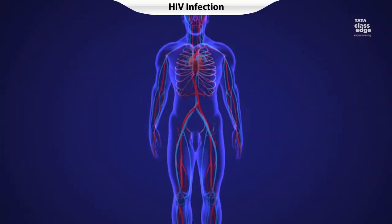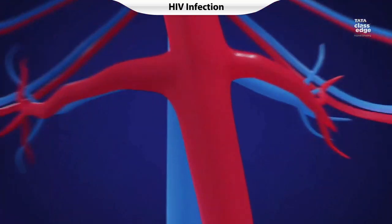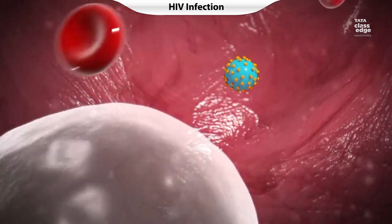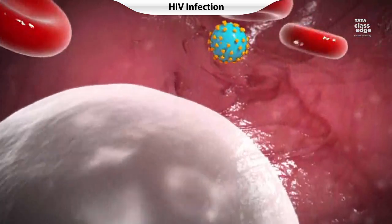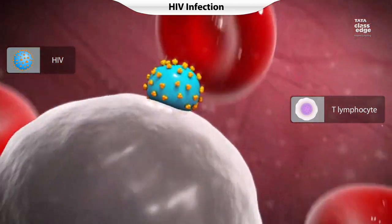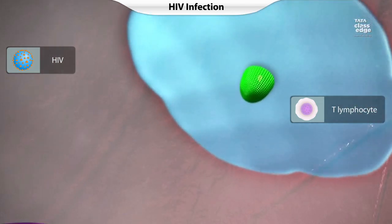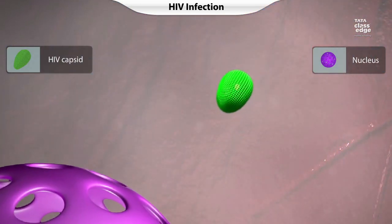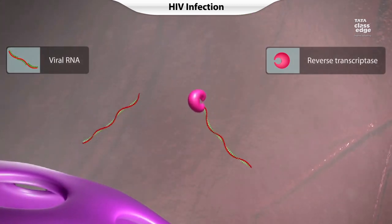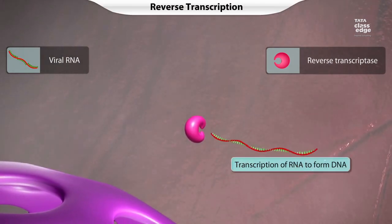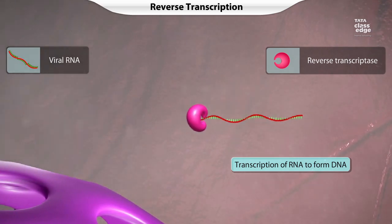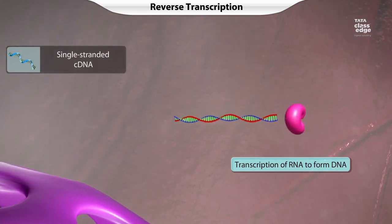HIV infects the T-lymphocytes that protect the body from infections. The outer layer of the virus merges with the cell membrane of the T-lymphocyte and the capsid enters the cytoplasm. The viral capsid dissolves to release the enzyme reverse transcriptase and the viral RNA into the host cell. The enzyme reverse transcriptase then synthesizes a complementary DNA, or cDNA, strand using the viral RNA as a template.